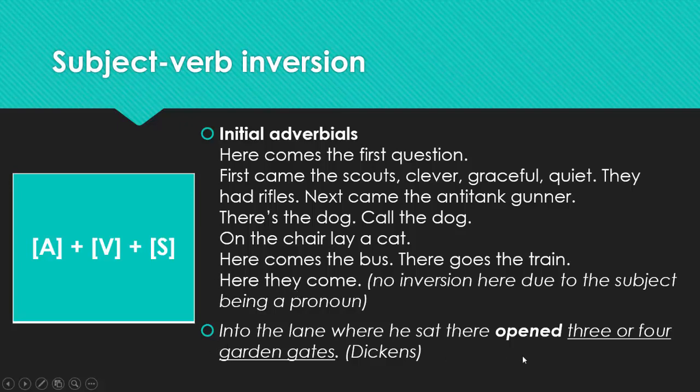One more example from the literature. Into the lane where he sat there opened three or four garden gates. Charles Dickens. Opened, the verb of a sentence. Three or four garden gates, the subject of a sentence. And into the lane where he sat there, the adverbial part. The first place, the second place, and the third place. Adverbial, verb, and subject, respectively.